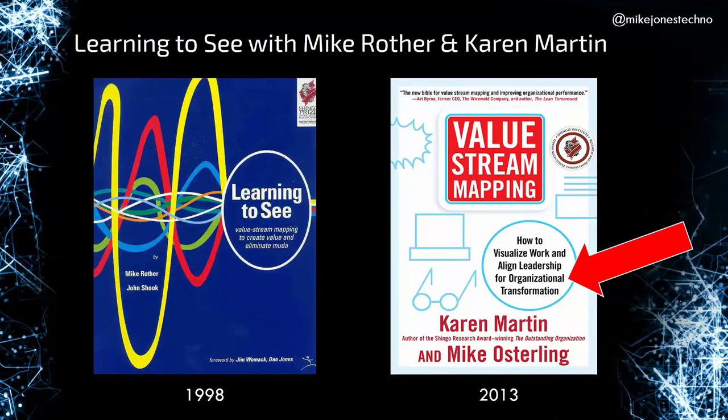Learning to See was written by Mike Rother about 20 years ago, focused on the manufacturing industry. Karen Martin, 15 years later, wrote a book that is one of the only ones focused on the office and service environment. Most books on value stream mapping are still about manufacturing, not software development cycles. There is an appendix at the back of Karen Martin's book that talks about software development, but it mostly applies VSM to a service or office environment.